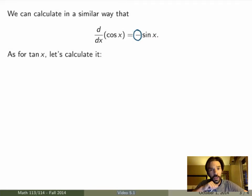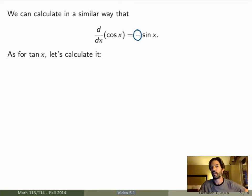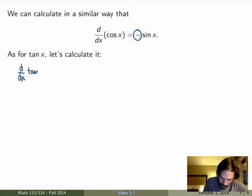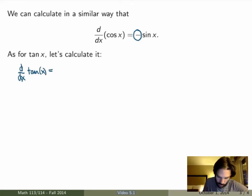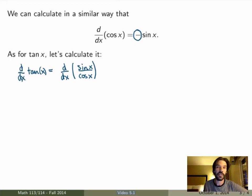From the derivatives of sine and cosine you can calculate the derivative of all other trig functions — you don't have to re-derive them from scratch, just use the quotient rule. Let me give you the example of the tangent function. How do I calculate the derivative of tan? Well, I can write the tan function as sine over cosine, which is its definition, and now this is just a quotient of two functions, so I can apply the quotient rule.